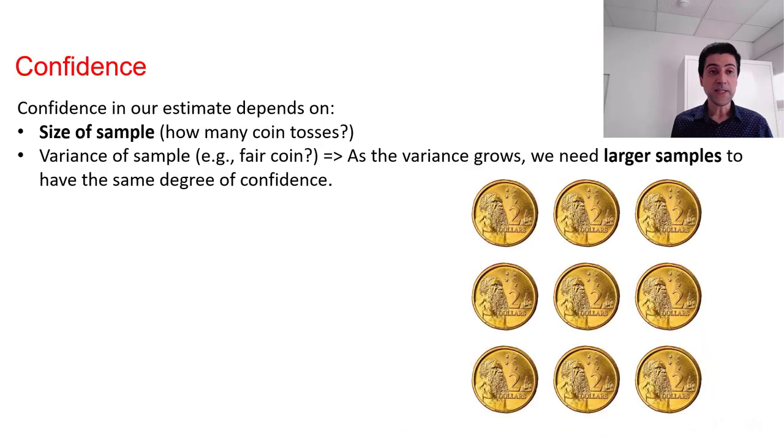So confidence is one important aspect. We should consider size of the sample plays an important role in the level of confidence that we can achieve. The larger is the sample results in the higher confidence that we can have. Another important aspect is the variance of sample. And if we have many outliers or noise in our data, we need larger samples to achieve a good level of confidence.